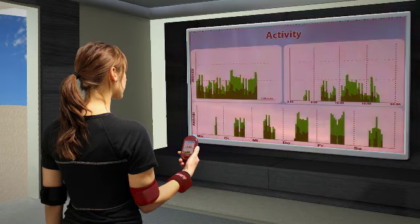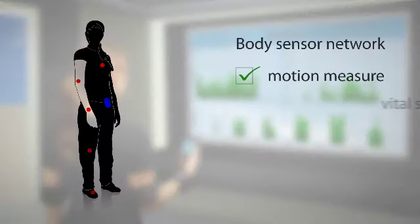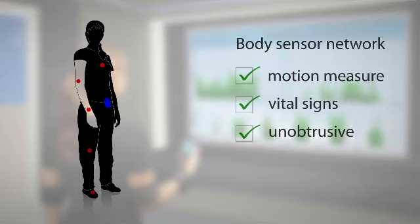The base of the PAMAP system is a network of miniature body-mounted sensors. These are used to measure motion and vital signs, and based on this, derive activity.